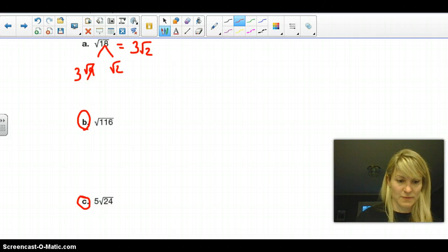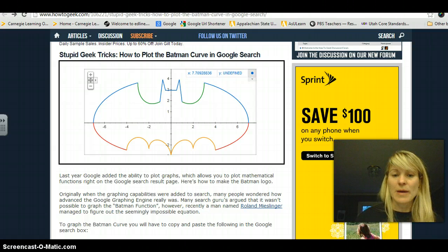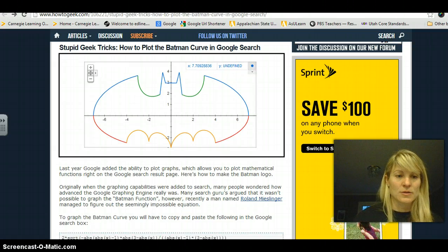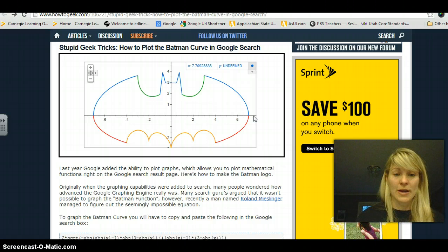And then I have a little extra credit for you. We have a superhero Batman theme this week. So on this webpage, you see that they were able to graph Batman. I want you to, for your extra credit, name the different functions, types of function families that are in by these different colors.